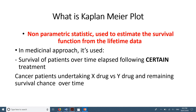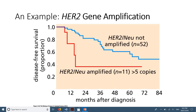For example, with cancer patients taking drug X — say they have breast cancer, brain tumor, or other cancers — versus drug Y, we take the treatment as a parameter and then measure their survival chance, seeing how it correlates with patients undertaking each drug. Let's now look at some examples.